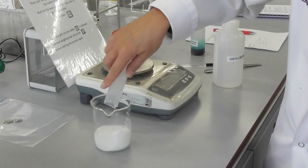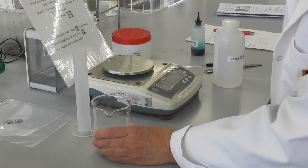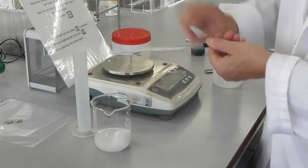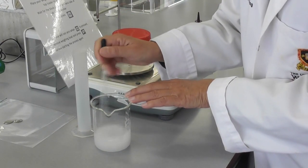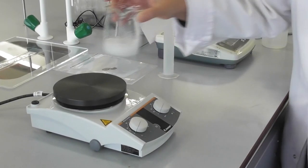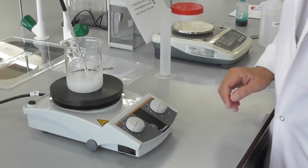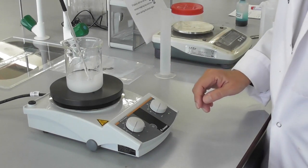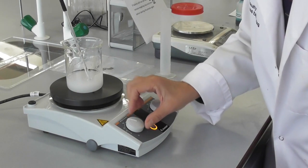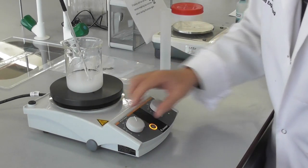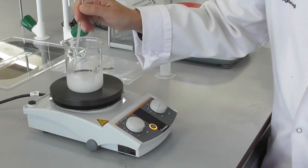We add the water to the sodium acetate in the beaker and stir the mixture. We put the beaker with the mixture on top of a hot plate and turn the heat up and gently stir the mixture.